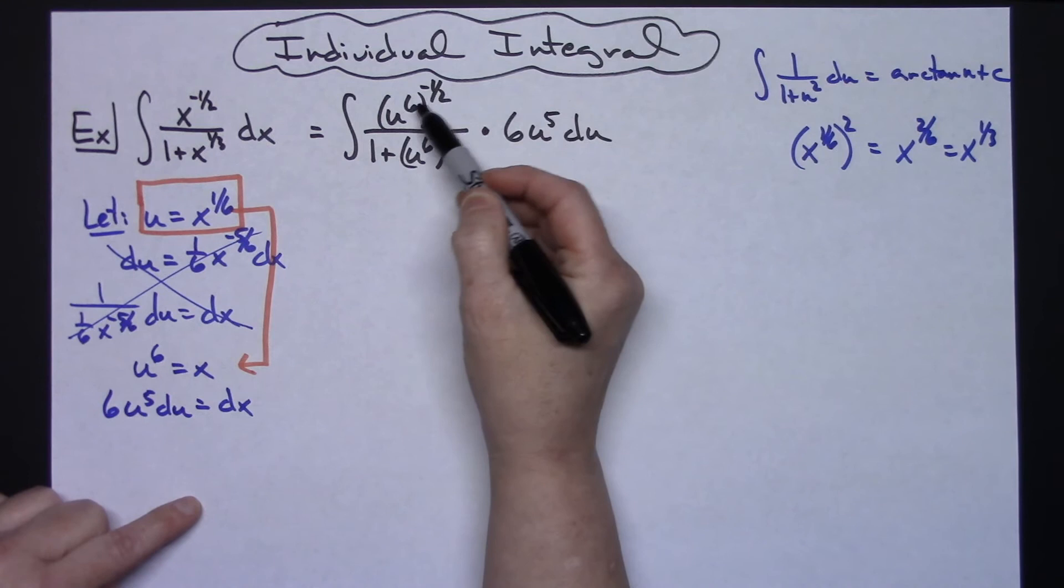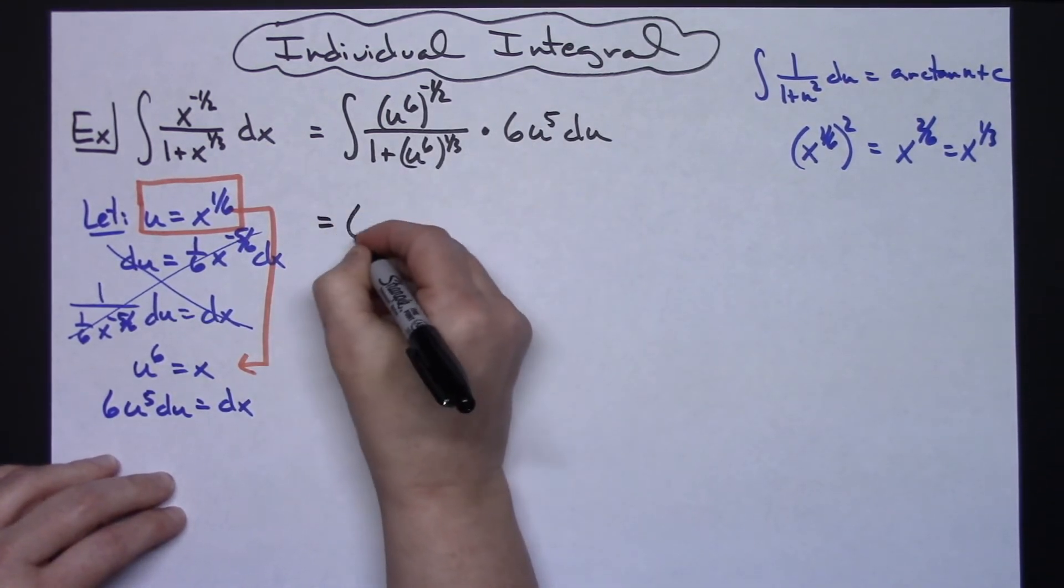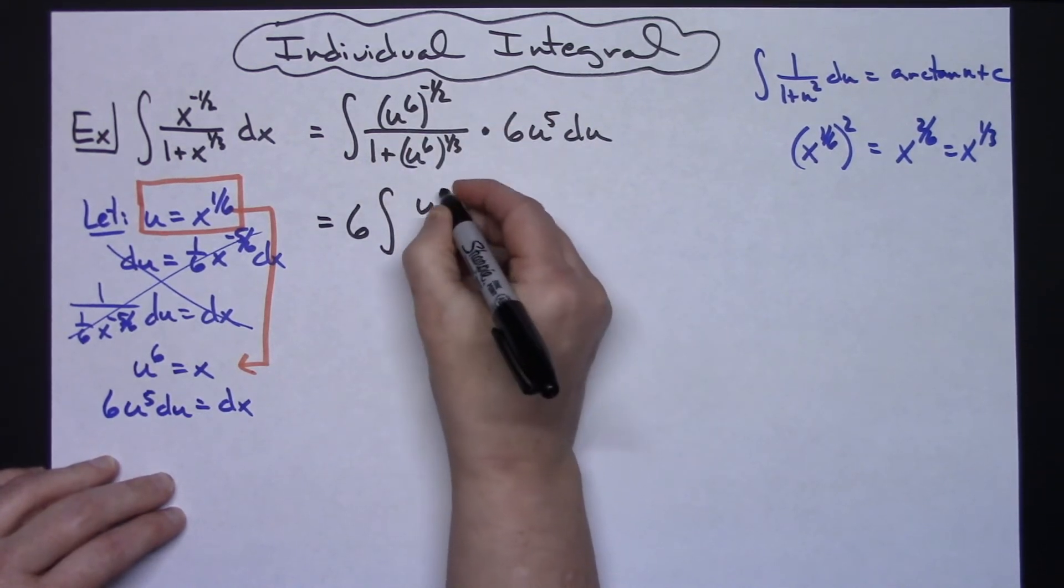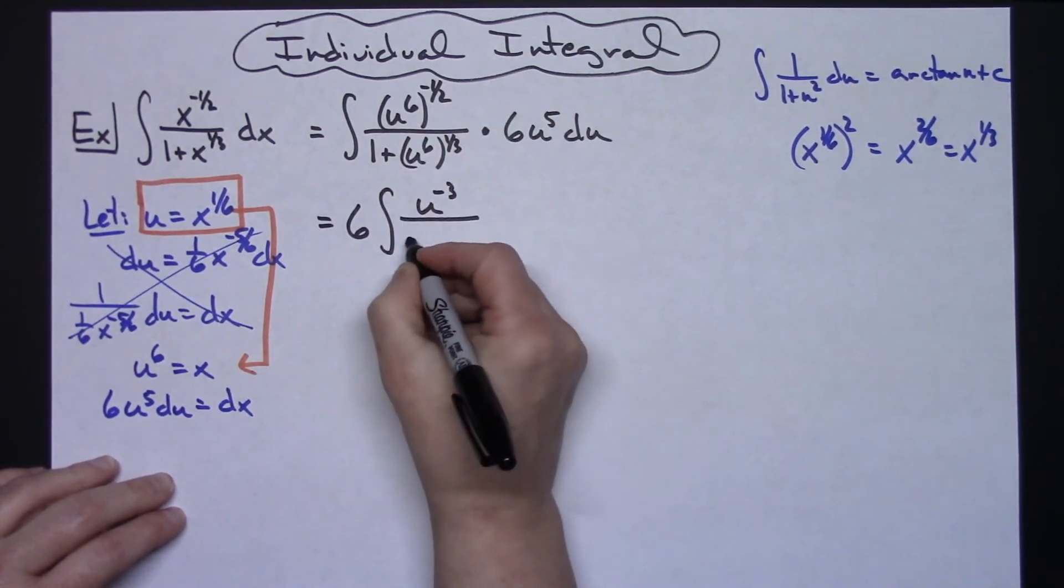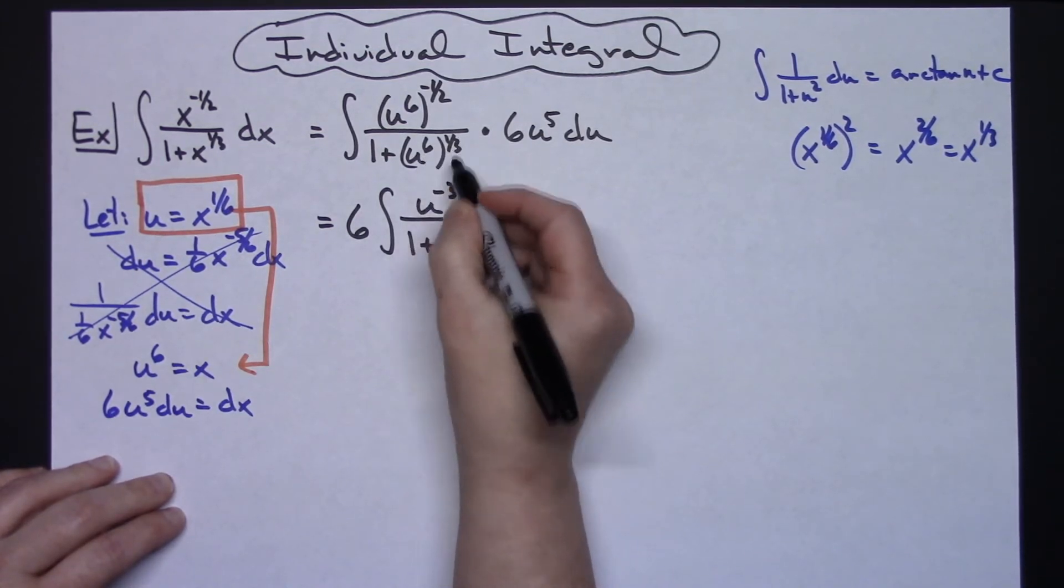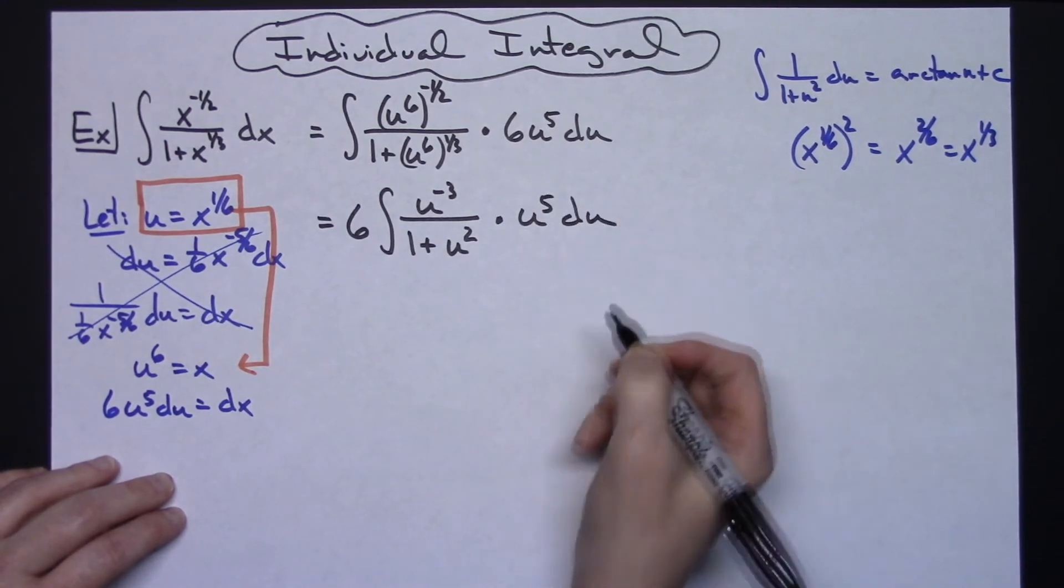Now we're going to do power raised to power. Simplify these inside here. Pull the 6 out. If I pull that 6 out, let's go ahead and simplify this. I'll have a u to the negative 3 on top. I'll have a 1 plus u raised to the second power and then leaving that u to the fifth du right there for the moment.